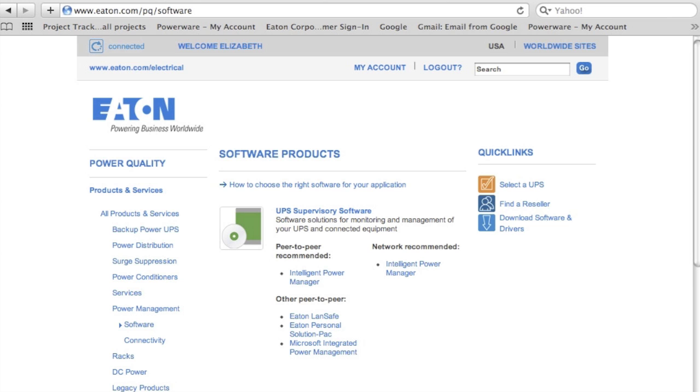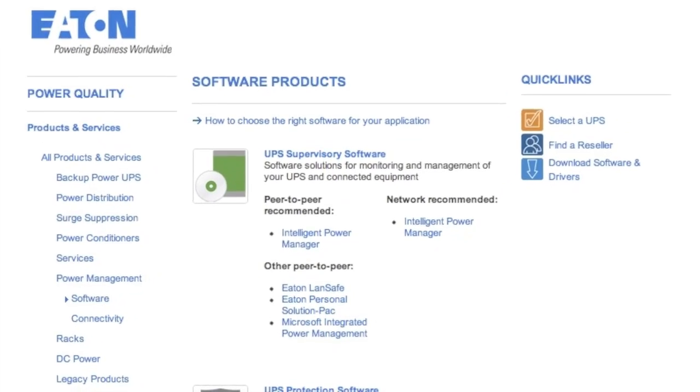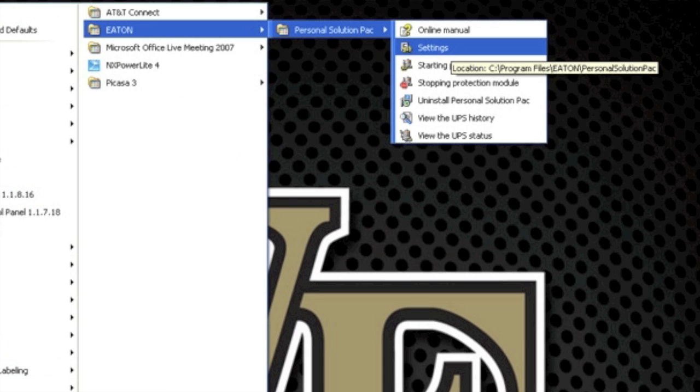Now we'll navigate to Eaton.com/pq/software, and there we'll find the peer-to-peer software heading, and we're going to look for the Eaton Personal Solution Pack software. Once you've downloaded and installed that software,